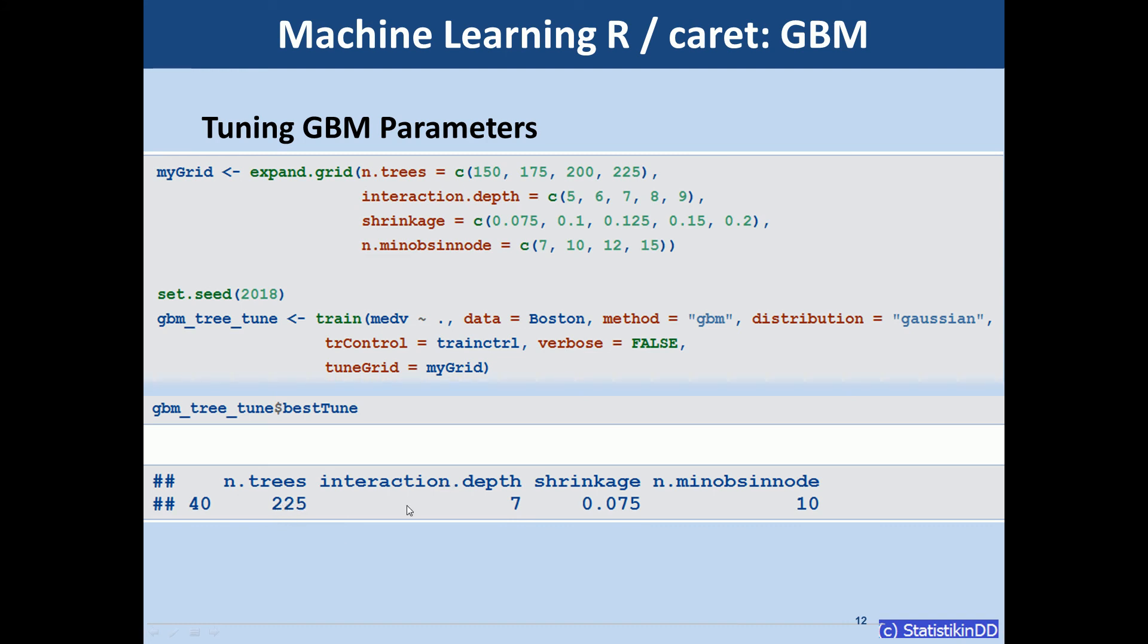Also interaction.depth or the number of splits per tree increased to 7. The shrinkage parameter was changed from 0.1 to 0.075. And only minimum terminal node size remains at 10.